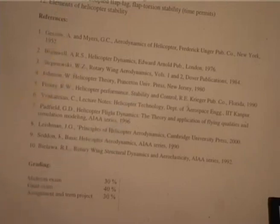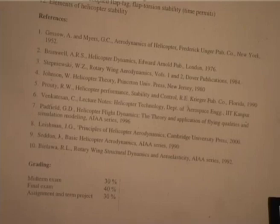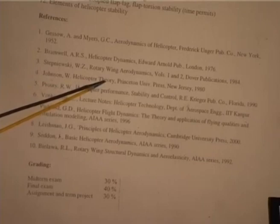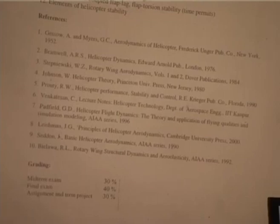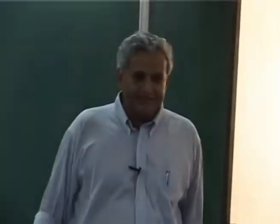Then there is Stepniewski, Rotary Wing Aerodynamics — a Dover publication. This also has a lot of information, but is difficult to read. Then Wayne Johnson — about a thousand pages — also called Helicopter Theory. This is a good book. All these books: if you know helicopters, you can understand the book. You cannot say that you will start reading the book and then understand — that is where the problem starts, because the dynamics is really important.